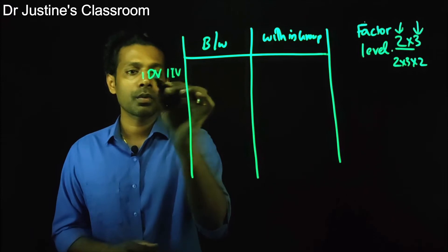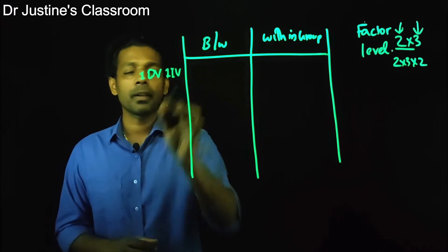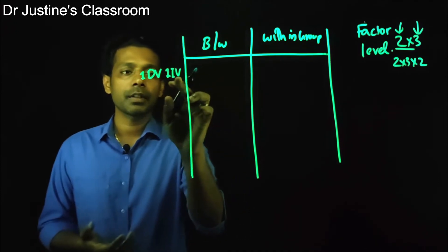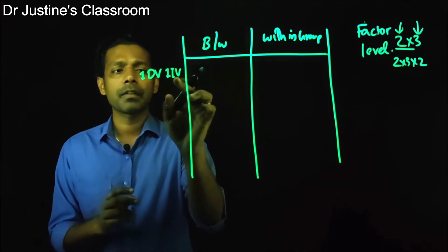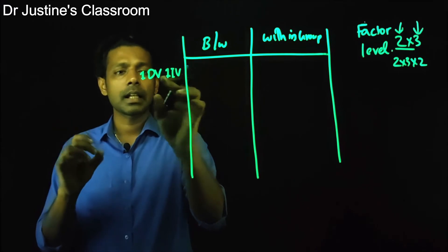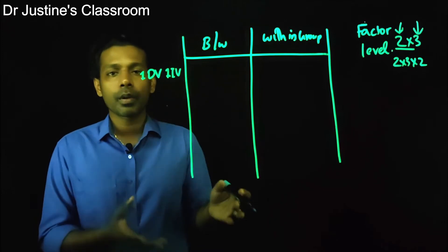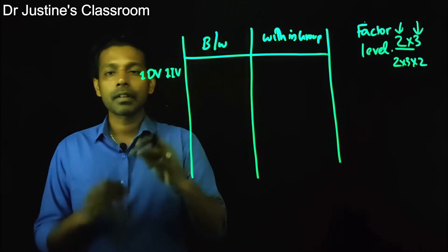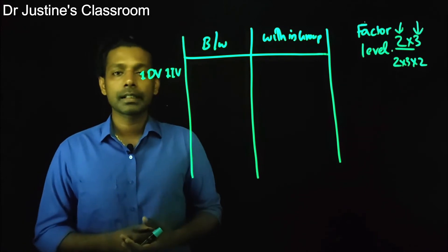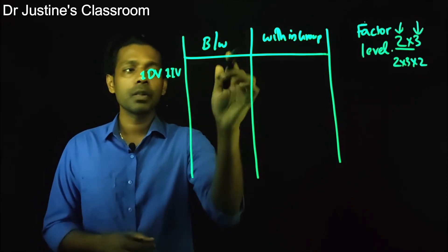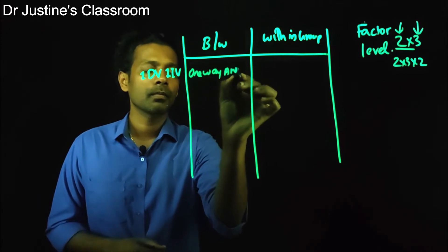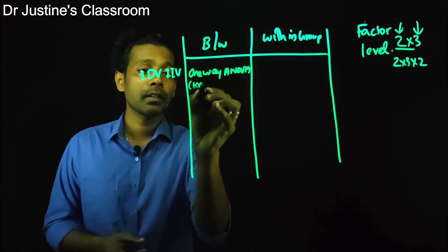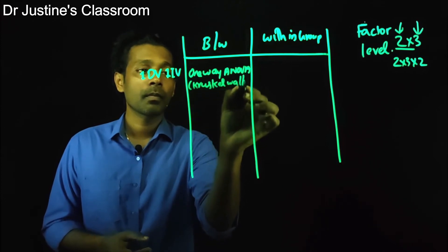ANOVA is applicable when you have one dependent variable and one independent variable with more than two groups. If you have just two levels, like male and female, you can use a t-test instead — you can do ANOVA but t-test is sufficient. If you have three levels, like male, female, and transgender, you need ANOVA. For a between-group design with one IV, we use one-way ANOVA. If assumptions are not met, the non-parametric alternative is the Kruskal-Wallis test.